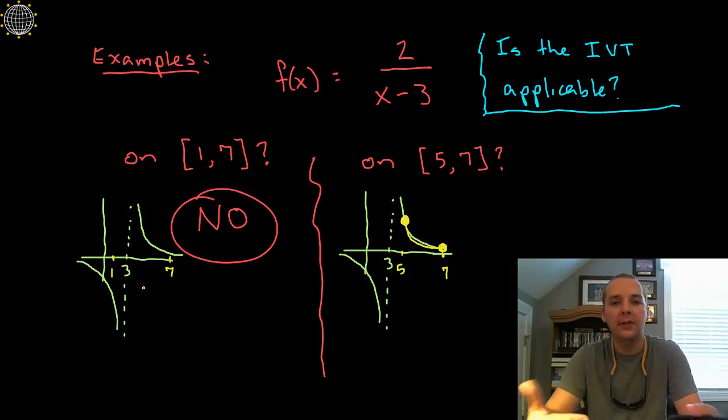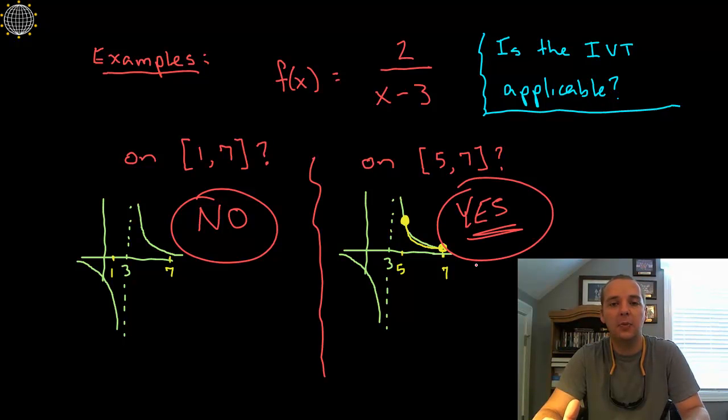Now what if we re-ask the question on the interval from 5 to 7? This function still has an asymptote, but there's a difference. The asymptote is not between 5 and 7, so if you look at my graph, between 5 and 7 the function is actually fine, so is the intermediate value theorem applicable? Well, between 5 and 7 yes it is, it is applicable there.